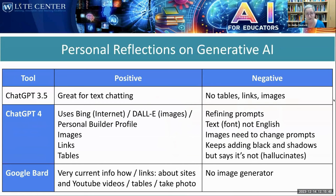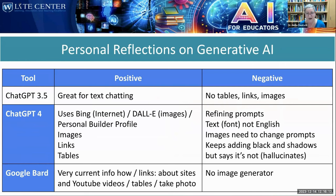These are my personal reflections on generative AI. ChatGPT 3.5 is great for text chatting, but that's about it. It's not accurate — it hallucinates and doesn't give you real information. It doesn't give you tables, and I love tables. It doesn't offer any links or images. So what does it do? Not really much.